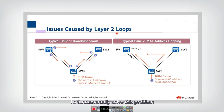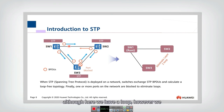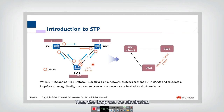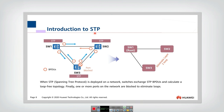To fundamentally solve this problem, we should eliminate the Layer 2 loops in the network. We propose the Spanning Tree Protocol. The idea is: although there is a loop, we can send messages to detect the topology, and if a loop is found, we block certain links to eliminate the loop and solve the infinite forwarding problem. Meanwhile, we also want redundancy to be maintained. That is the core idea of STP.